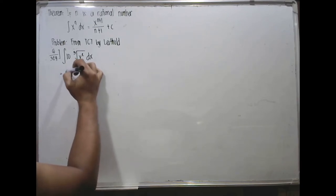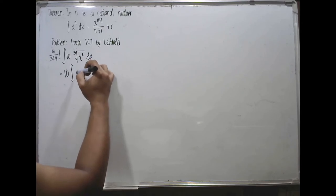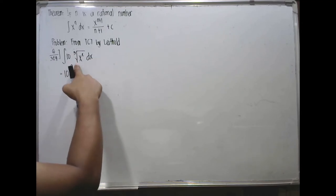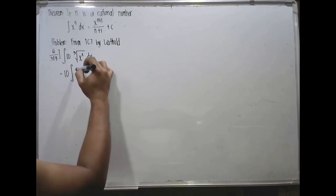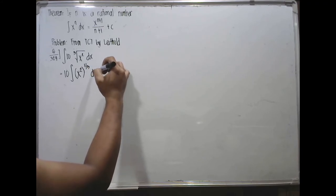So first, always write the constant times the integral. Then your cube root of x squared from algebra can also be written as x squared raised to 1 third dx.